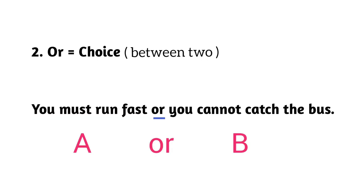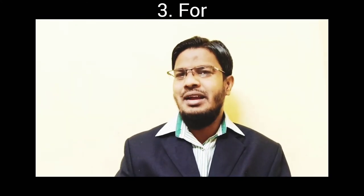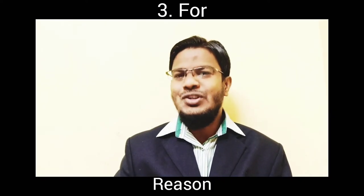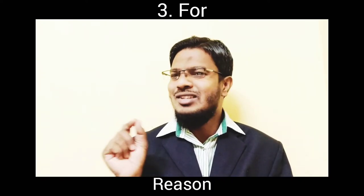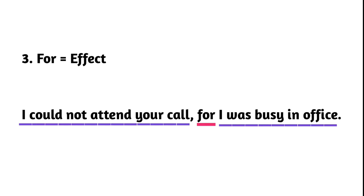Number three: 'for.' For is used to combine two simple sentences that involve a reason. Look at this example: 'I could not attend your call for I was busy in the office.' You can see 'for' is used to combine two simple sentences that involve a reason.